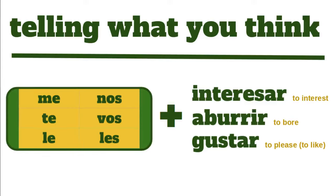Buenos días! In today's video, we're going to talk about three different verbs: the verb interesar, which means to interest; aburrir, which means to bore; and gustar, which means to please, and is also used to say I like something or you like something. When we use these verbs, we also use object pronouns, so we'll talk about those in this video too.